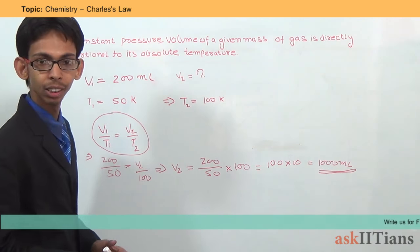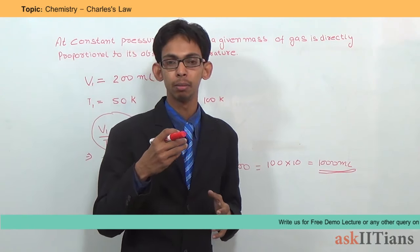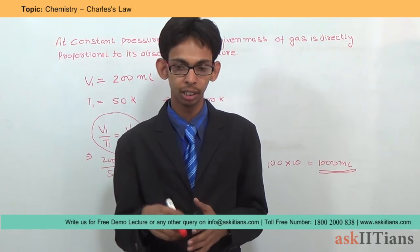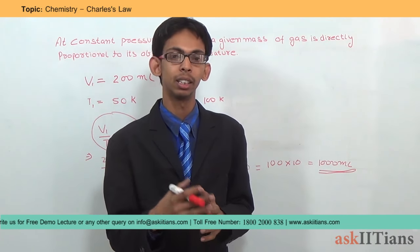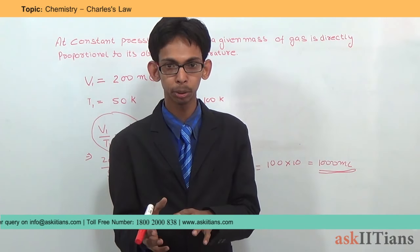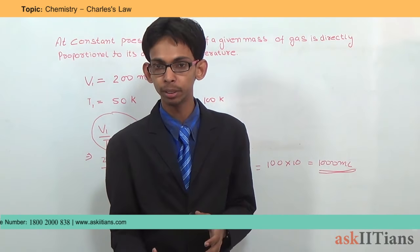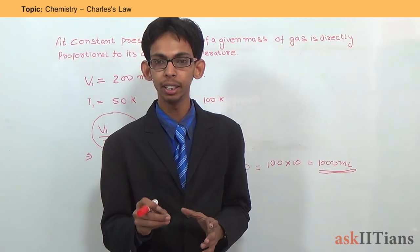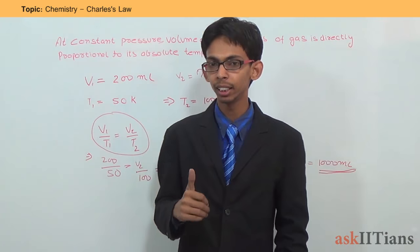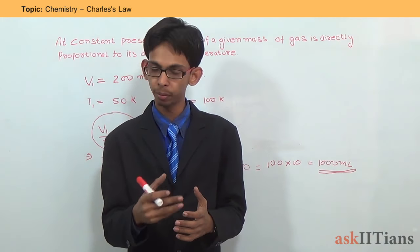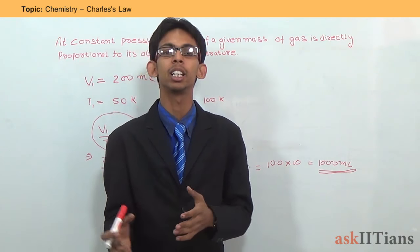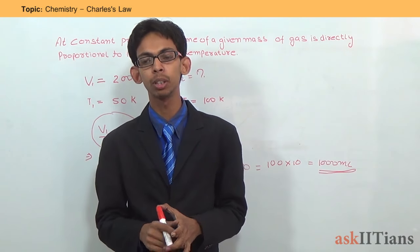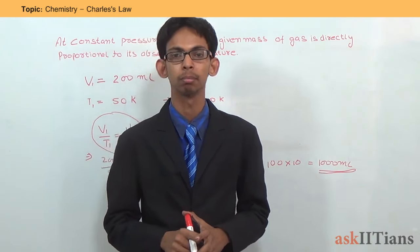This was Charles's Law, according to which the volume of a fixed mass of gas at a particular pressure is directly proportional to the absolute temperature — that is, temperature in Kelvin. I hope it is clear to you. In our next video, we will discuss the ideal gas equation. Thank you.